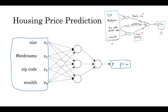And notice also that each of these circles, these are called hidden units in the neural network, that each of them takes as inputs all four input features. So for example, rather than saying this first node represents family size, and family size depends only on the features x1 and x2, right? Instead, we're going to say, well, neural network, you decide whatever you want this node to be, and we'll give you all four input features to compute whatever you want.